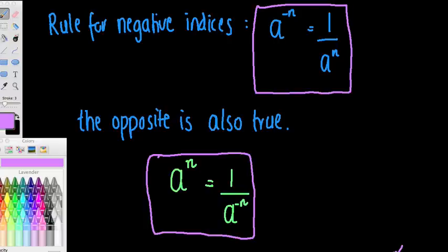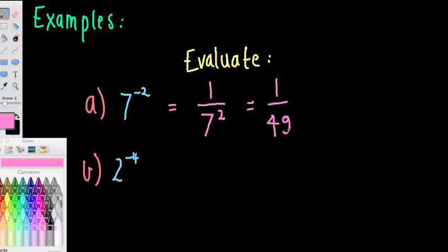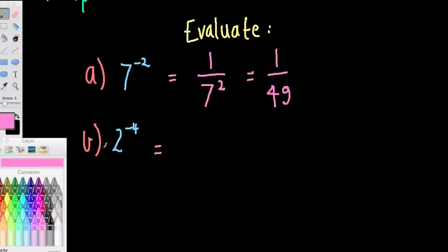Let's look at some examples. Evaluate — find what these are actually equal to. 7 to the power of negative 2: I've got a negative index, so I put that term to the bottom of the fraction, leaving a 1 on top, and the index is now positive. 7 squared is 49, so the answer is 1 over 49. Next, 2 to the negative 4 is the same as 1 over 2 to the positive 4, which equals 1 over 16.